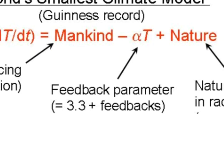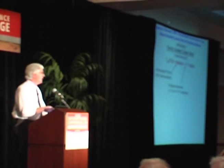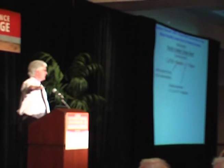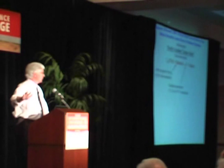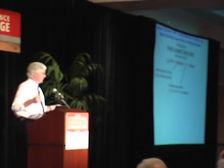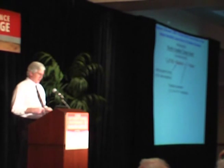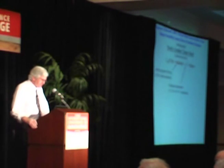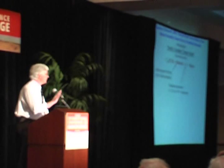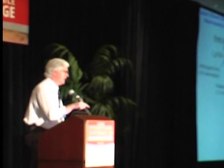Now, feedbacks — 3.3 watts is the magic number. This is why climate modelers are so worried about catastrophic global warming. When you heat up the Earth, for every degree it heats up, it puts out more infrared radiation — a natural cooling process at a rate of about 3.3 watts per square meter per degree. That's what cools the Earth. If there are positive feedbacks that offset that 3.3 watts, and you get positive feedbacks that add up to more than that, we're in a heap of trouble — that's where you get tipping points and an inherently unstable climate system.